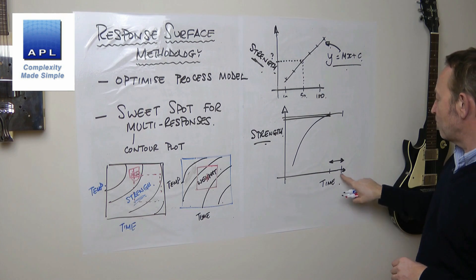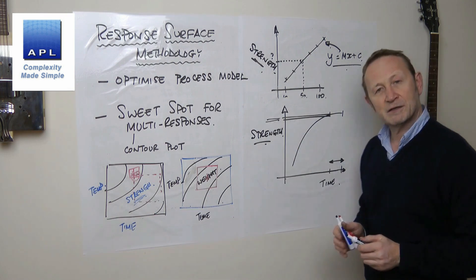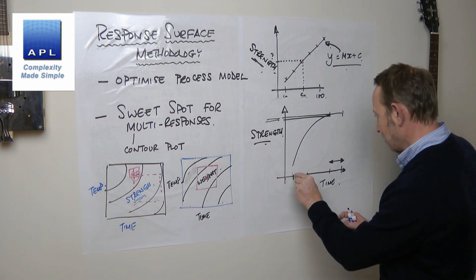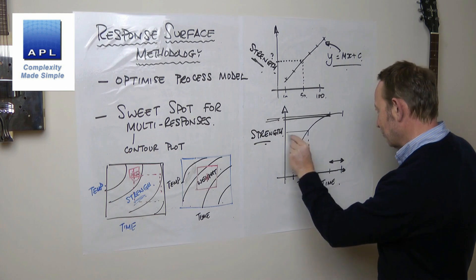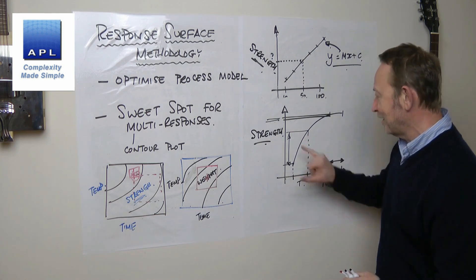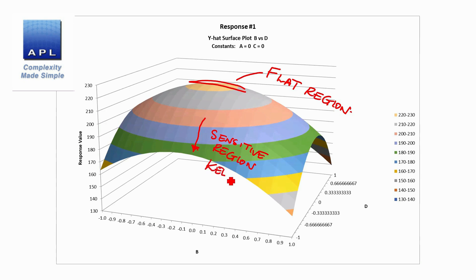I could set my time in the flat region, my tolerance could be nice and wide, and I would get an imperceptible effect on my output of interest. However, if I take that same tolerance and set time on the steep part of the curve, if I allow time to move backwards and forwards — wow — the same tolerance for time here has no effect, but there it has a massive effect. The software can't show you this, but the response surfaces can. When the incline gets very steep, that is a region of sensitivity — keep away from it. Where the surface goes flat, that is a region of robustness — use that, set your tolerances and settings around that.